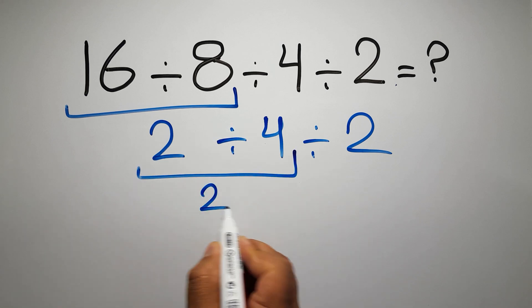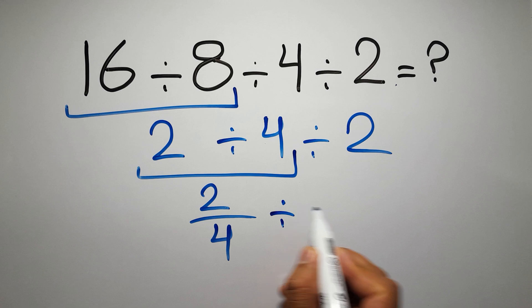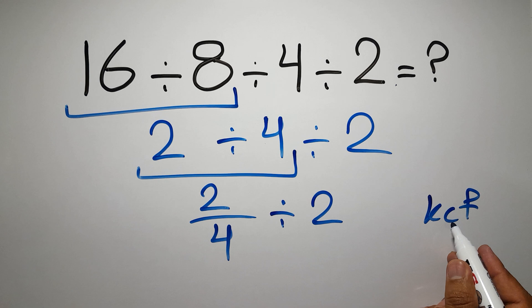We can write 2 divided by 4 as 2 over 4, then divided by 2. According to the KCF rule - K stands for keep, C stands for change, and F stands for flip - we can write: